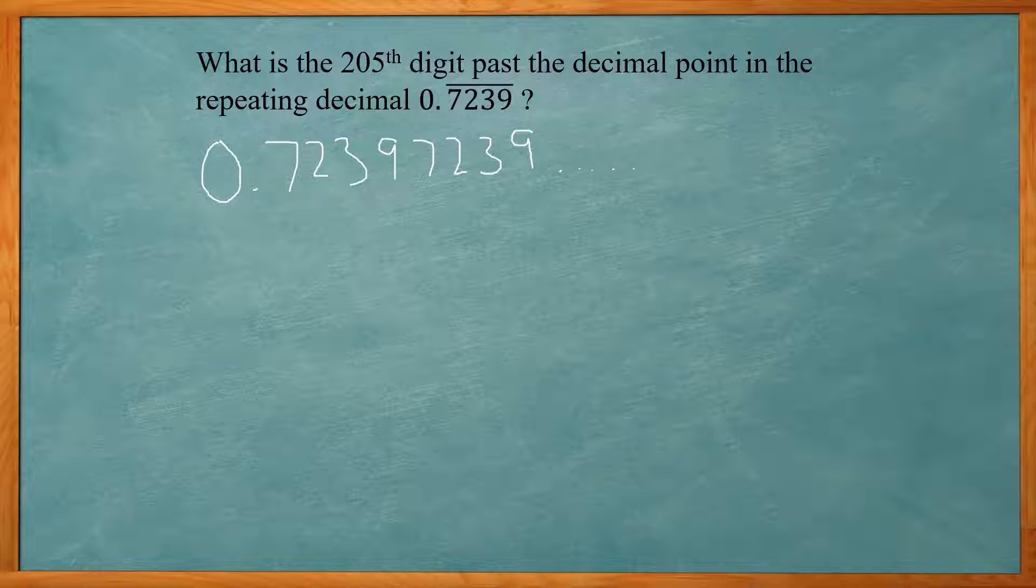Okay now we know that the first digit is a 7 and it's going to repeat every fourth one, so we know the fourth digit, the 9, is going to be appearing every fourth digit in here.